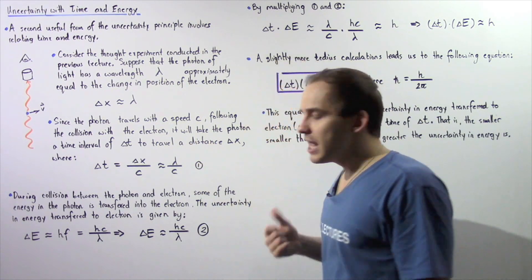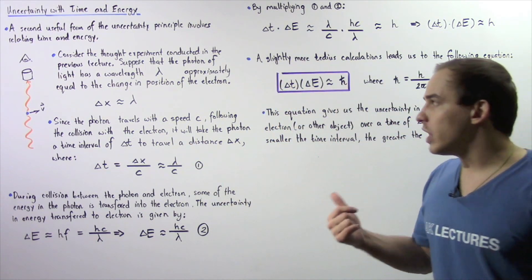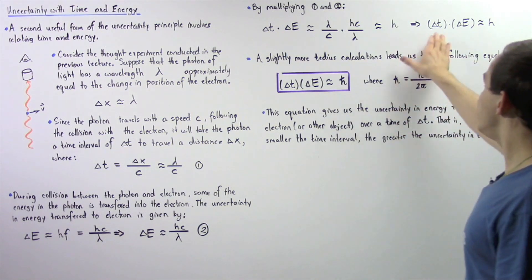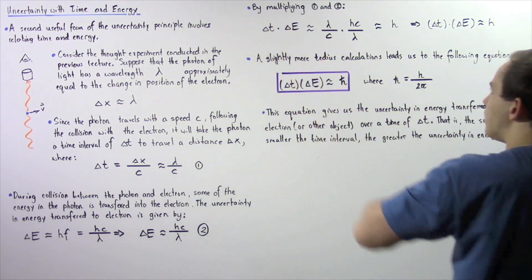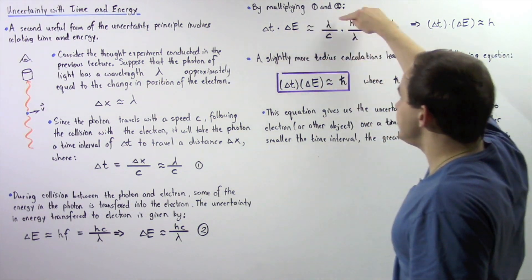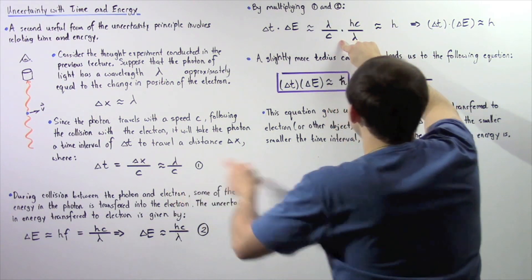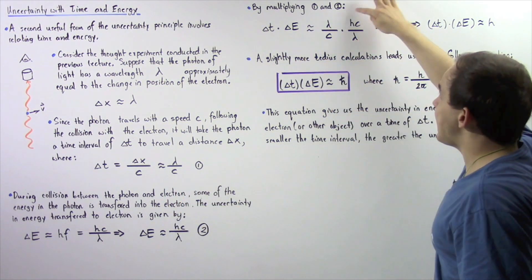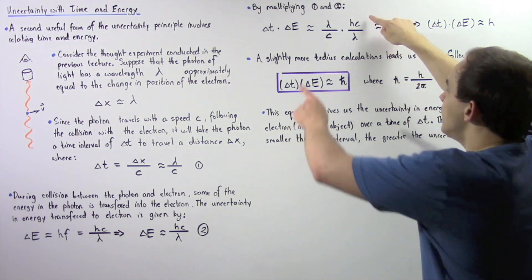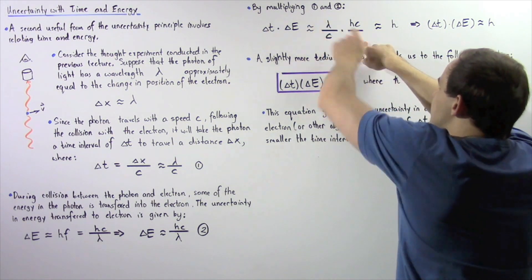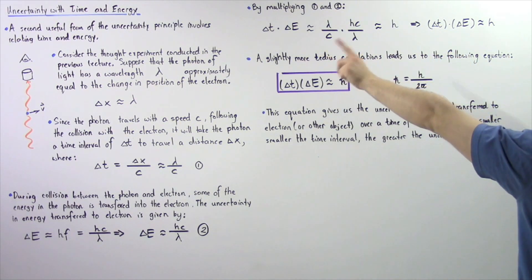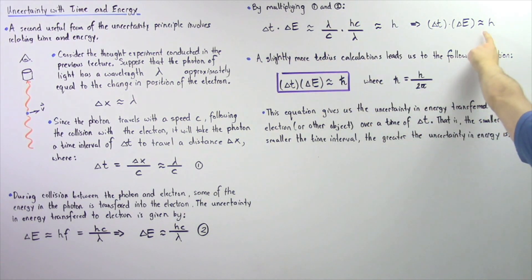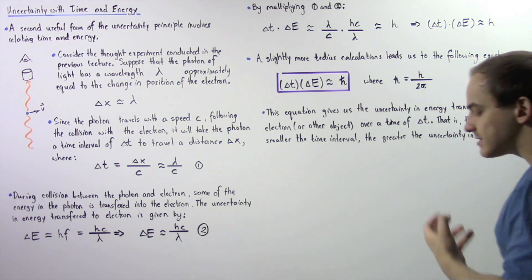If we take Equation 1 and multiply it by Equation 2, we get the following result. Delta t multiplied by delta E: delta t is lambda divided by c, and delta E is hc divided by lambda. The c's cancel, the lambda's cancel, and we see that delta t multiplied by delta E is approximately equal to h, Planck's constant.